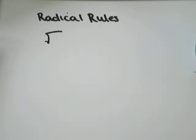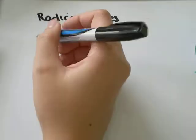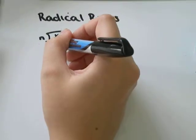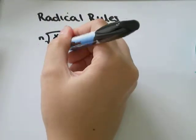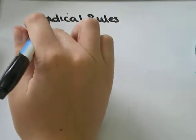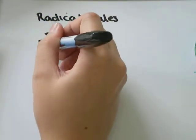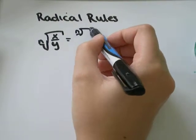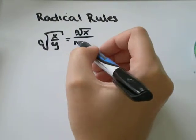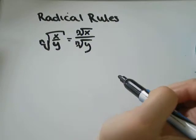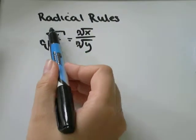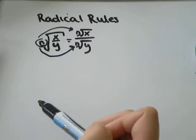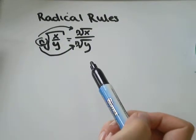The first rule we have is that if we have any root of something — let's do y — and under the root sign is a fraction, that's equivalent to the nth root of the top over the nth root of the thing on the bottom. You can split it up, using the same number on the outside when you split it up into a fraction.